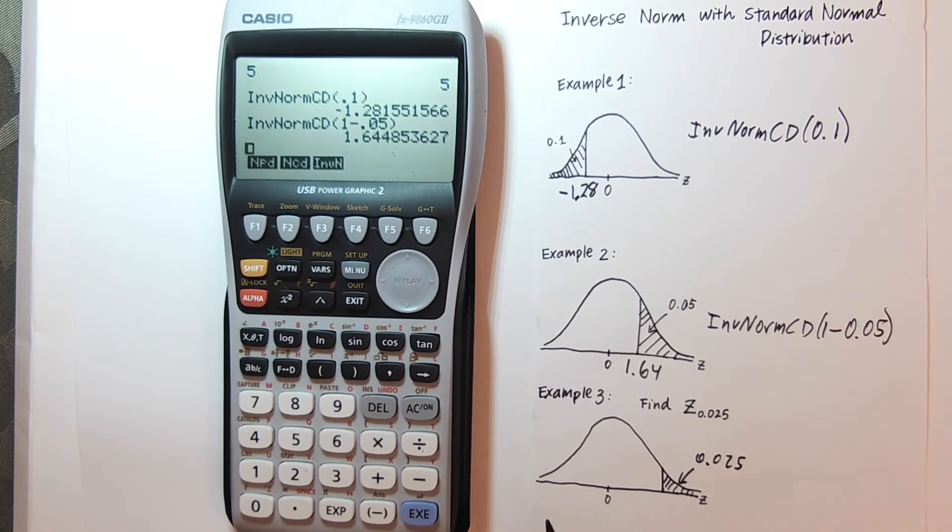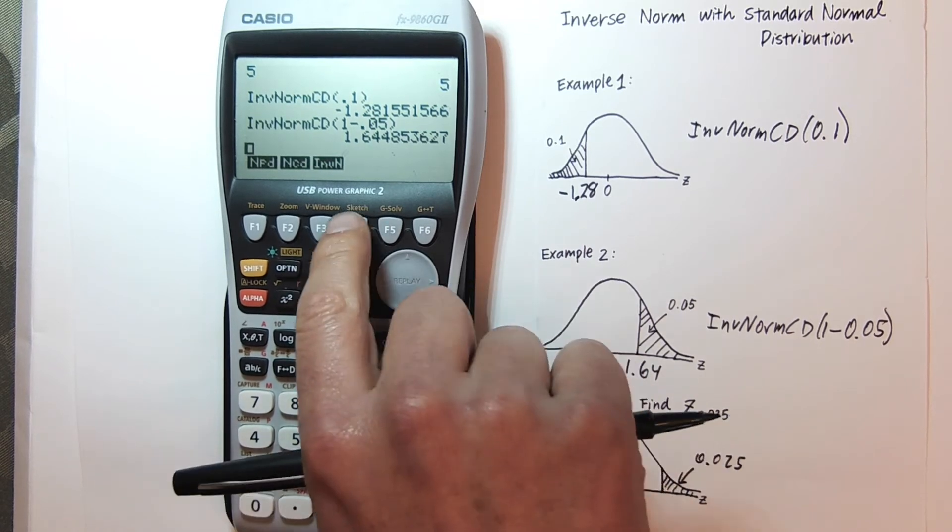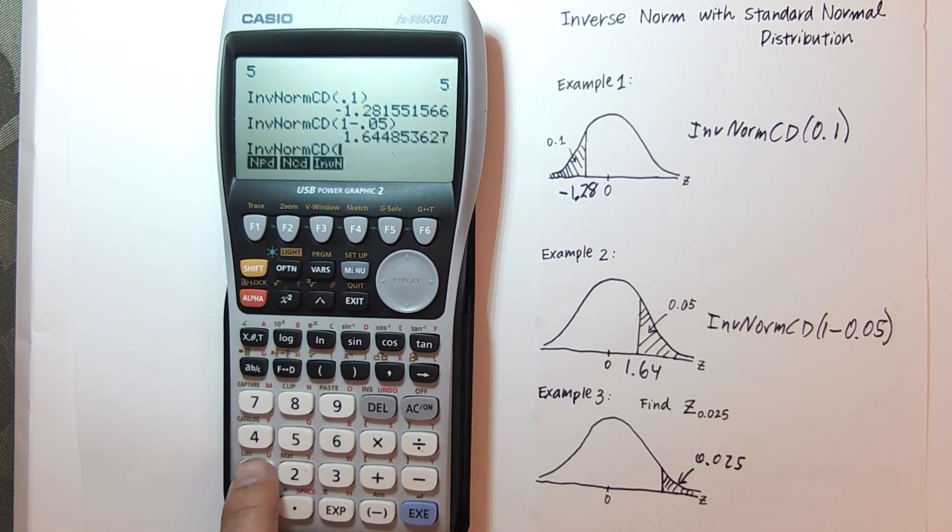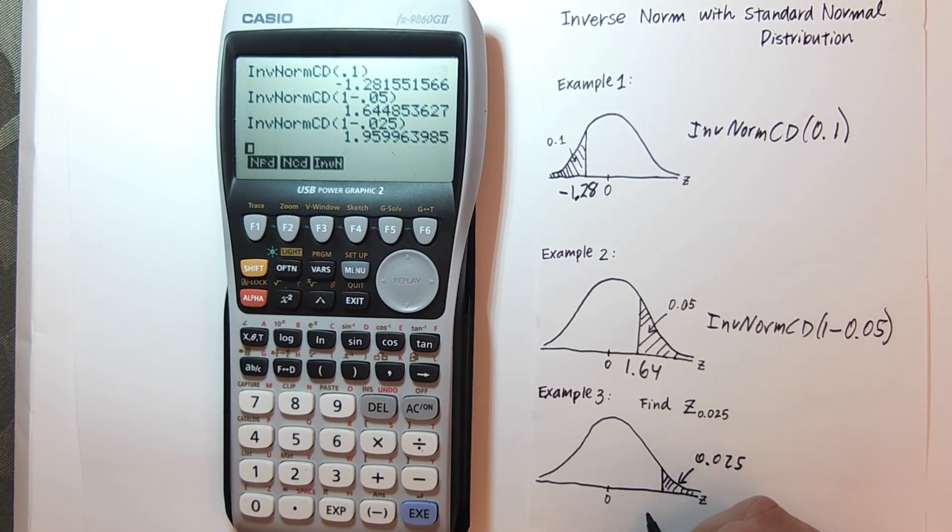Now once again, our calculator only knows area to the left. So I'm going to actually have to go inverse norm. Again, 1 minus the 0.025. And that will give me my positive Z score of 1.96.